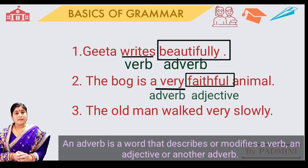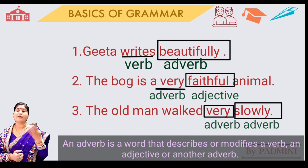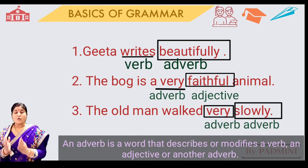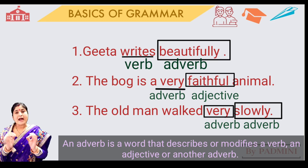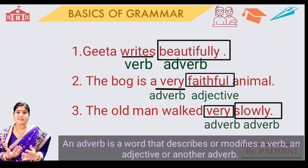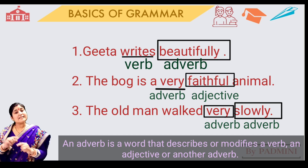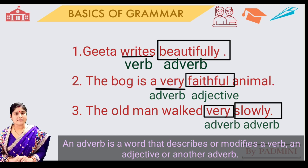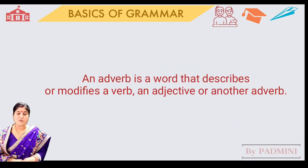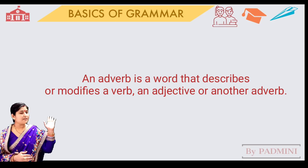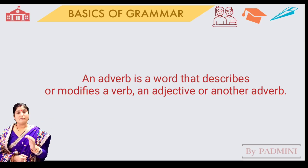The old man walked very slowly. Here, slowly is an adverb and very is also an adverb. So in this sentence, the adverb very modifies another adverb, slowly. From here we can get the definition: an adverb is a word which modifies a verb, an adjective, or another adverb.